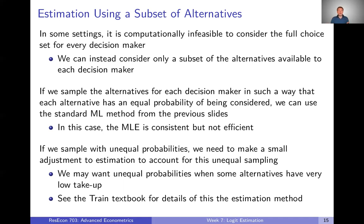It turns out that if we sample alternatives such that each alternative has an equal probability of being considered, we can just use the standard maximum likelihood methods and get consistent estimates. The MLE will be consistent in that case. It won't be efficient — we're essentially throwing information away by considering only a subset of alternatives — but it will be consistent. So with enough data, you should still get consistent parameters with relatively large statistical power.